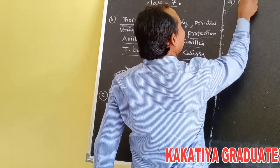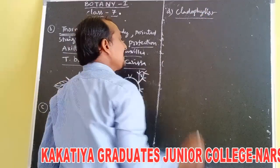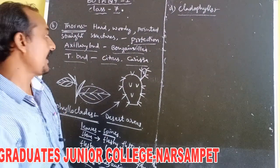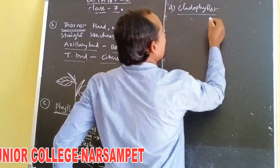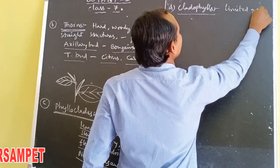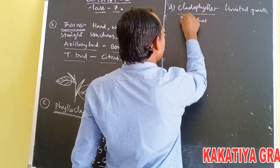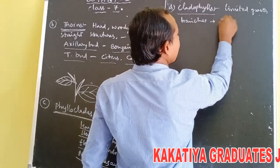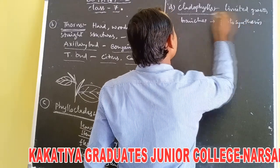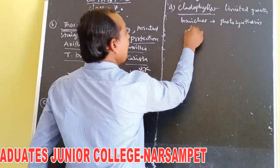Fourth is cladophylls. Cladophylls means limited-growth branches that are modified to perform photosynthesis. These type of modifications are called cladophylls. Example: Asparagus.